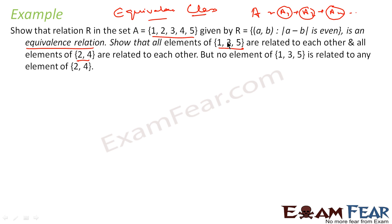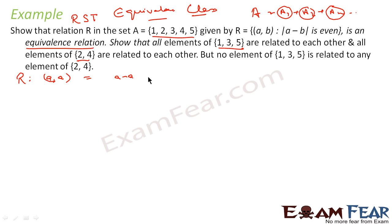So what we can do is — it is already told it is an equivalence relation where A minus B is even. First, we have to prove it is an equivalence relation. For a relation to be equivalence, it has to be reflexive, symmetric, and transitive. For reflexive, A comma A should be a member of this set. That means A minus A should be even. A minus A is nothing but 0, and 0 is even. So this relation is reflexive.